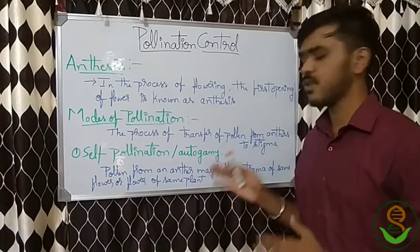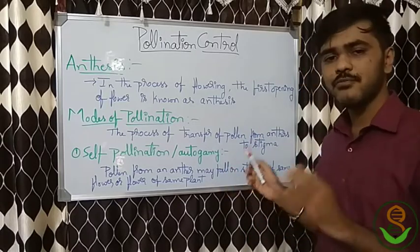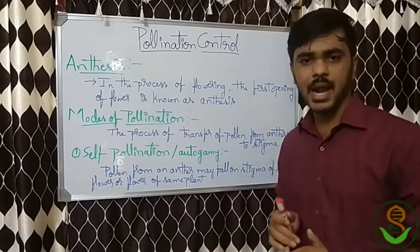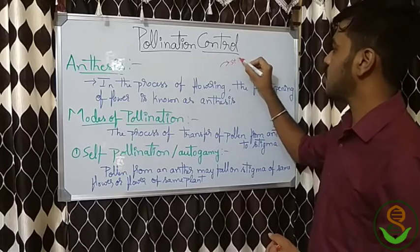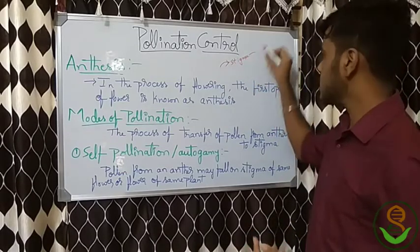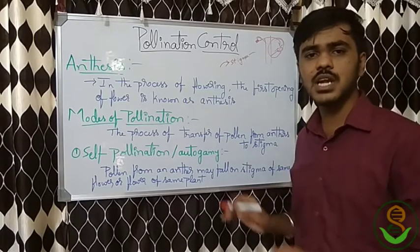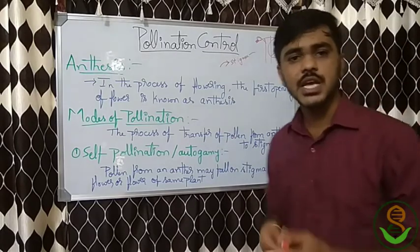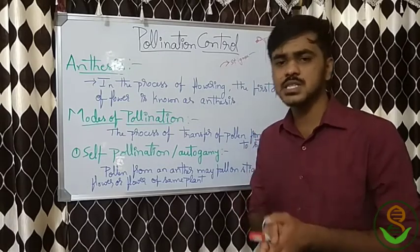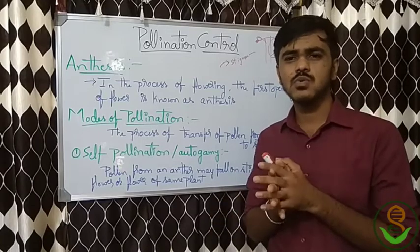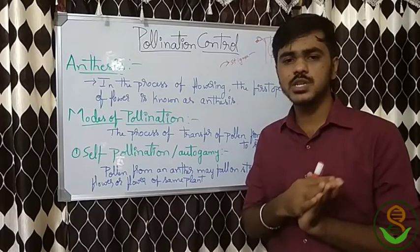Self-pollination, also called autogamy, is defined as: pollen from an anther may fall on the stigma of the same flower, or another flower of the same plant. In the process of self-pollination, zero to five percent of cross-pollination may be observed, and up to five percent of cross-pollination we still consider as self-pollinated. As a rule, hermaphrodite flowers are very favorable and a monoecious condition must be present; otherwise, self-pollination is highly impossible.